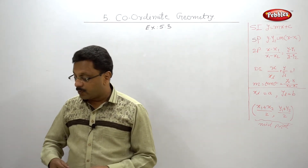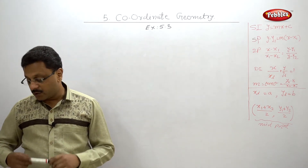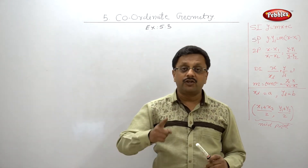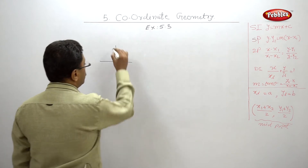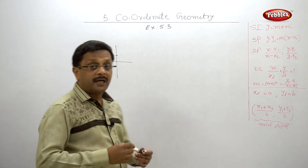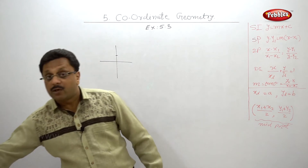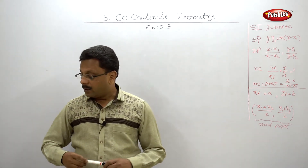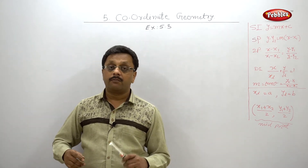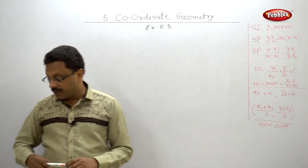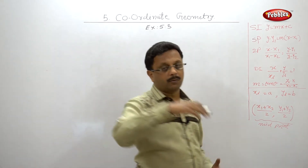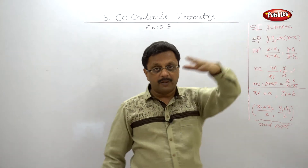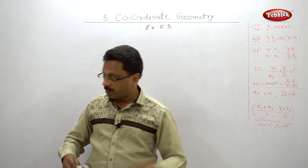Second example: line PQ intersects the y-axis at point (0, 3) with slope minus 1 by 2. Write the equation of line PQ. They are given that the line PQ intersects the y-axis at (0, 3) — that means this is the y-intercept. They are not given directly that the slope and y-intercept are this. What they are given is that the line PQ intersects the y-axis at point (0, 3), meaning y-intercept is 3, with slope minus 1 by 2. They have twisted the problem — the y-intercept is not directly given. But you have to write the equation in slope-intercept form. Please pause your video and write the answer and check it.